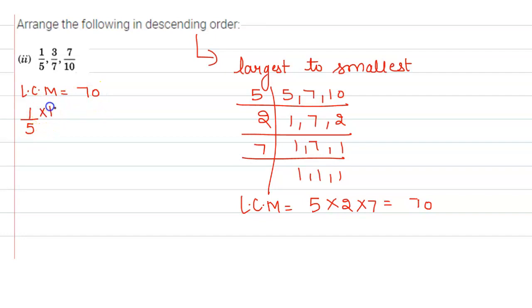Therefore 14 will be multiplied by the numerator and denominator, so here we get 14 by 70.